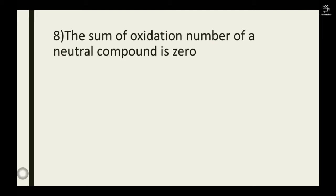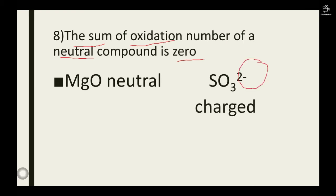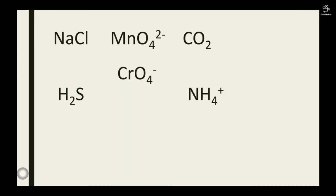Let's look at this crucial rule: The sum of oxidation number of a neutral compound is zero. A neutral compound is a compound that has no charge. Look at MgO and SO3 2 minus. MgO has no charge on it, either positive or negative. But for SO3, it has negative 2 as the charge. Whenever you see a compound without a charge, the compound is a neutral compound. Hence, MgO is validated as a neutral compound.